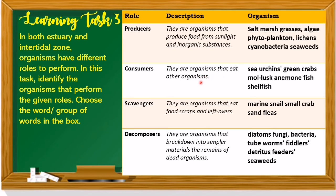For consumers — organisms that eat other organisms — examples are sea urchins, green crabs, mollusks, anemone, fish, and shellfish. For scavengers — organisms that eat scraps and leftovers — examples are marine snail, small crab, and sand fleas. For decomposers — organisms that break down the remains of dead organisms into simpler materials — examples are diatoms, fungi, bacteria, tube worms, detritus feeders, and seaweeds.